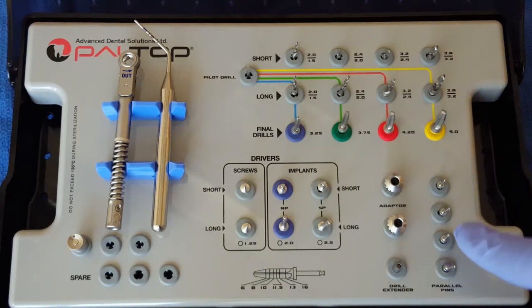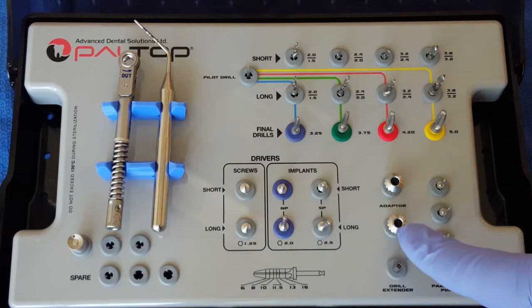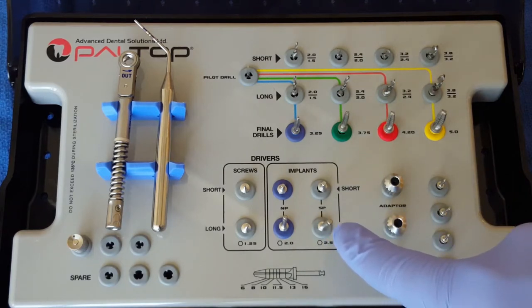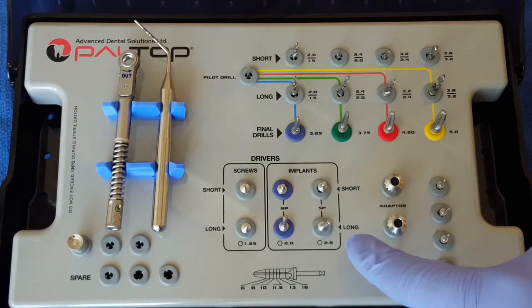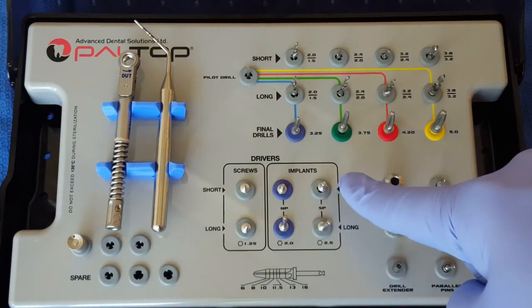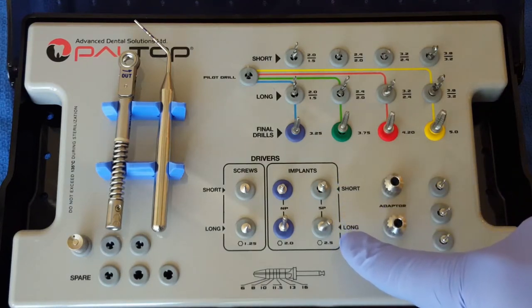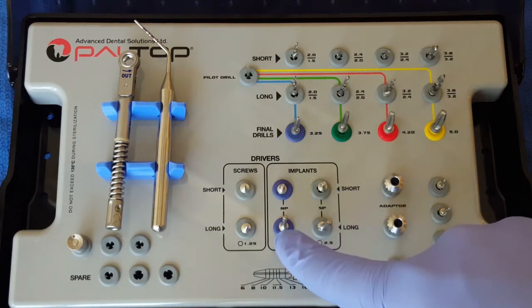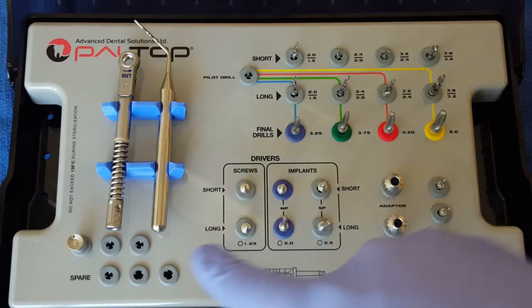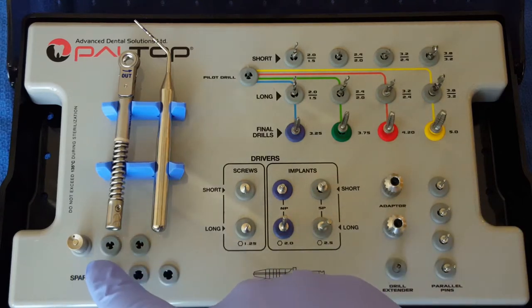It also includes parallel pins, adapter handles that are used with the implant delivery keys, as well as long and short screwdrivers. The delivery keys all come in a short and long variety, and they are both for the standard platform implants as well as the narrow platform implants.